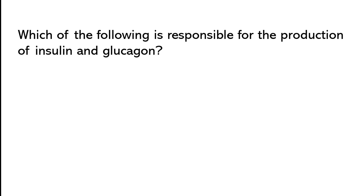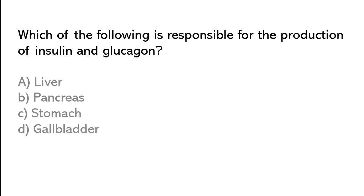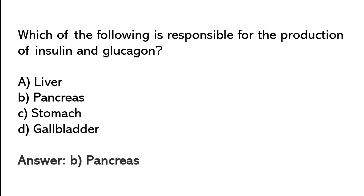Which of the following is responsible for the production of insulin and glucagon? Liver, Pancreas, Stomach, Gallbladder. So the correct answer is option B. Pancreas is responsible for the production of insulin and glucagon.